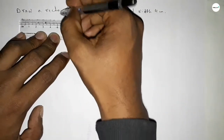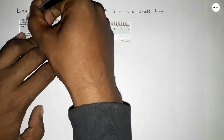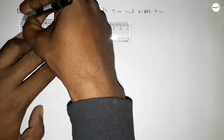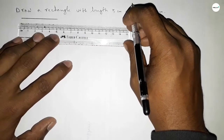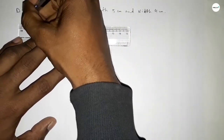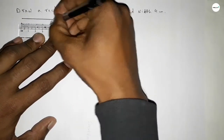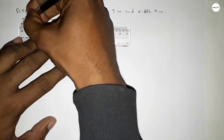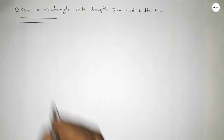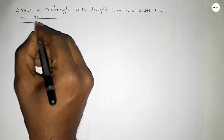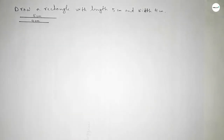First of all, drawing the given length 5 centimeters — that is 0, 1, 2, 3, 4, and 5. So first drawing a line of length 5 centimeters. Next, drawing a line of length 4 centimeters — that is 1, 2, 3, 4. We have to draw a line of length 5 centimeters and a line of length 4 centimeters.